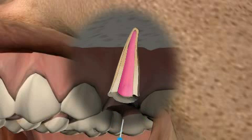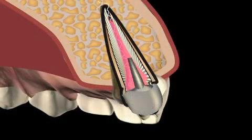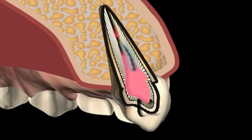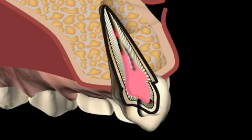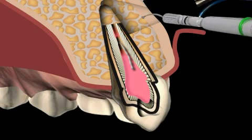Sometimes access from above is not possible — for example, on pivot teeth, or if a root canal instrument is chipped and stuck in the tooth interior. Using the retrograde root tip resection, the tooth can be cleaned and sealed from below, meaning from the capped root tip. There will be more about this in the video by the same name.